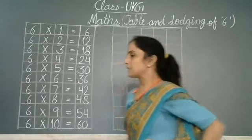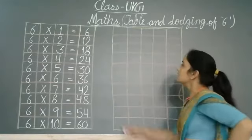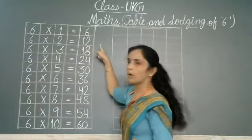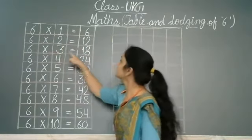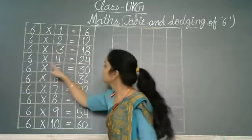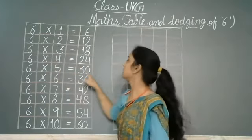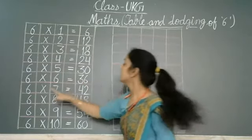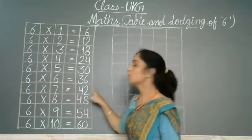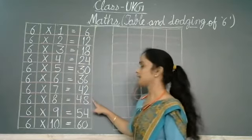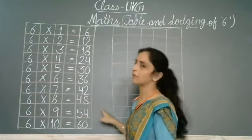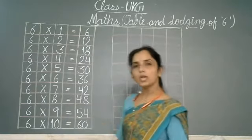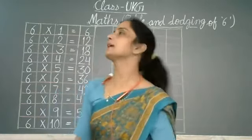Repeat the table of 6 with me once: 6 ones are 6, 6 twos are 12, 6 threes are 18, 6 fours are 24, 6 fives are 30, 6 sixes are 36, 6 sevens are 42, 6 eights are 48, 6 nines are 54, 6 tens are 60.